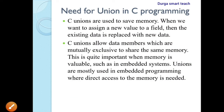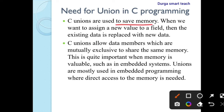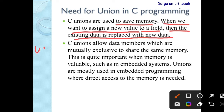Next, the need for union in C programming. C unions are used to save memory. When we want to assign a new value to a field, the existing data is replaced with new data. For example, I am declaring one union. Here union is a keyword used to indicate union. 'Stu' is the union name.